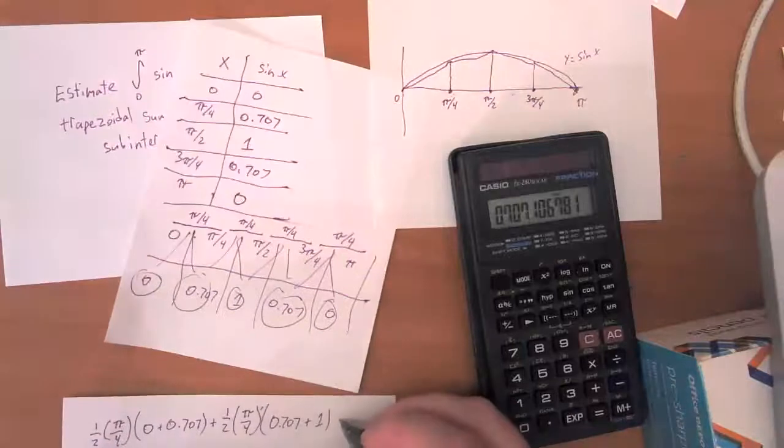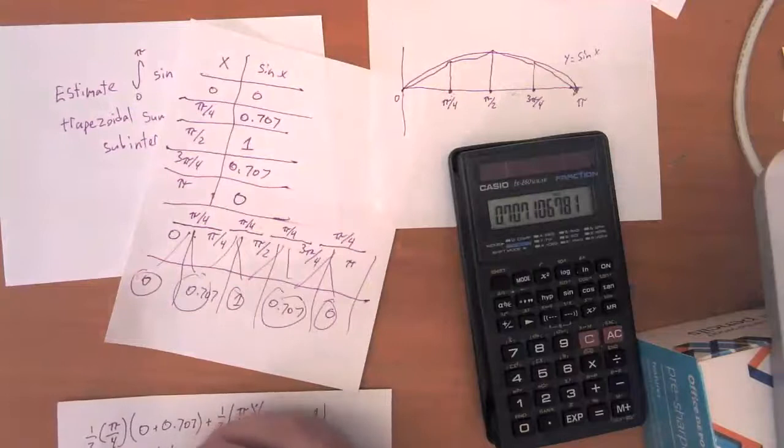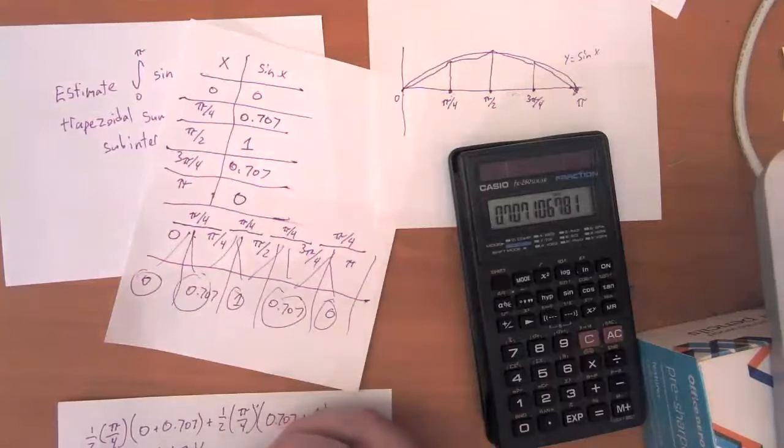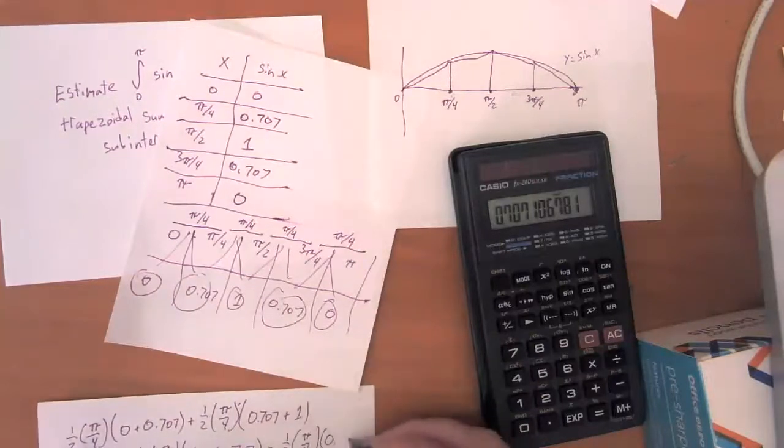That's the area of my second trapezoid plus one half times pi over four times one plus 0.707. And the last one is one half times pi over four times 0.707 plus zero.